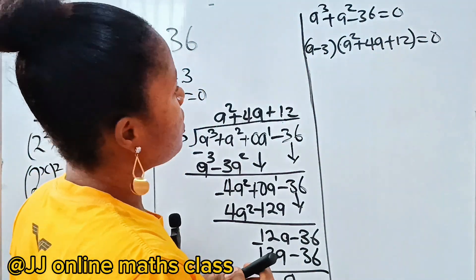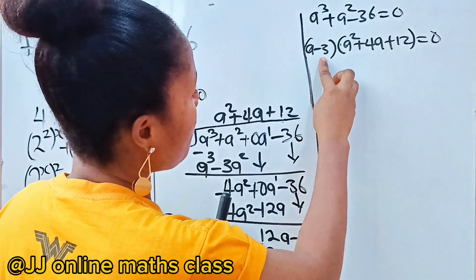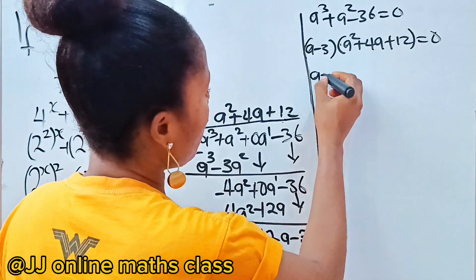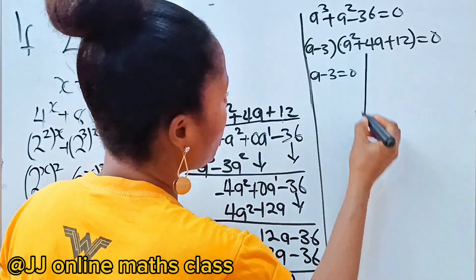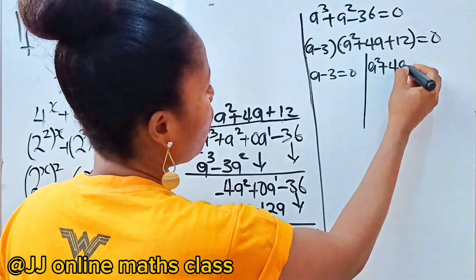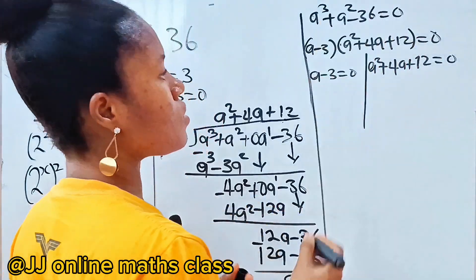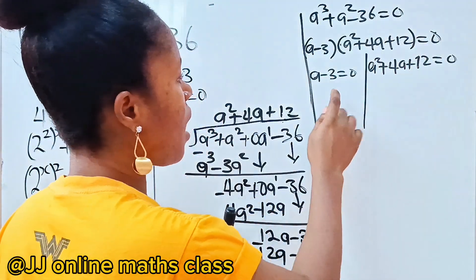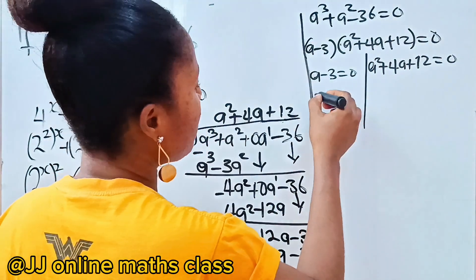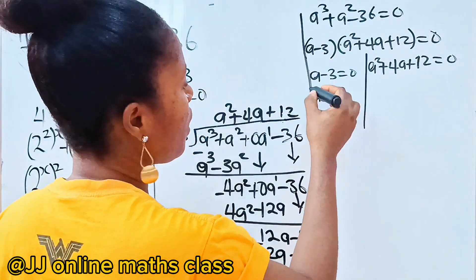From the factored form, either a - 3 = 0, giving a = 3, or a² + 4a + 12 = 0. Solving the first equation gives a = 3.